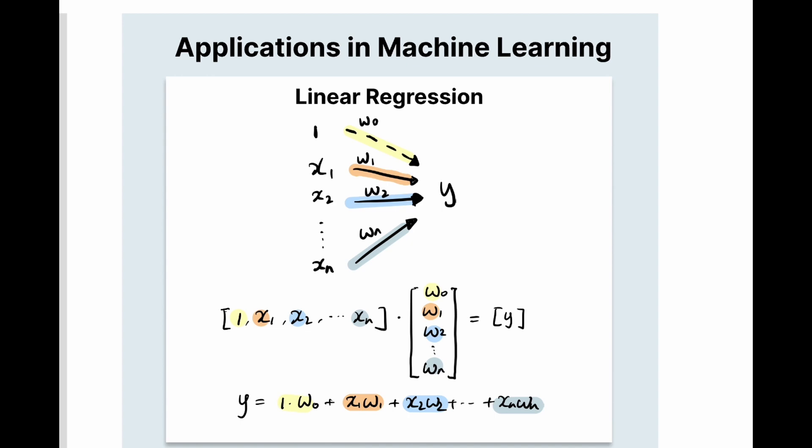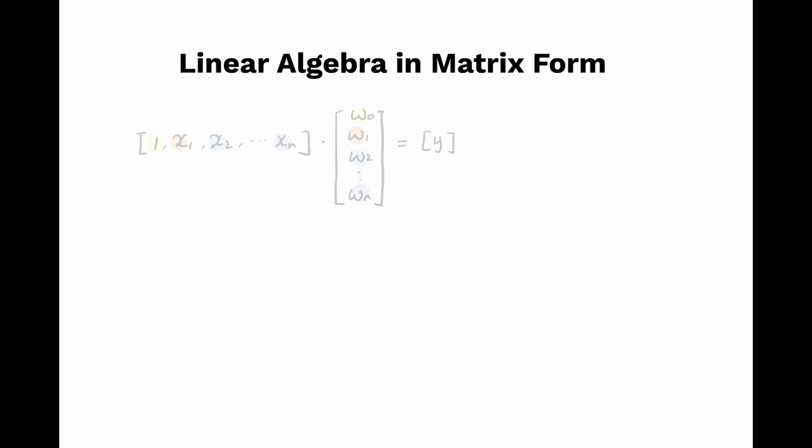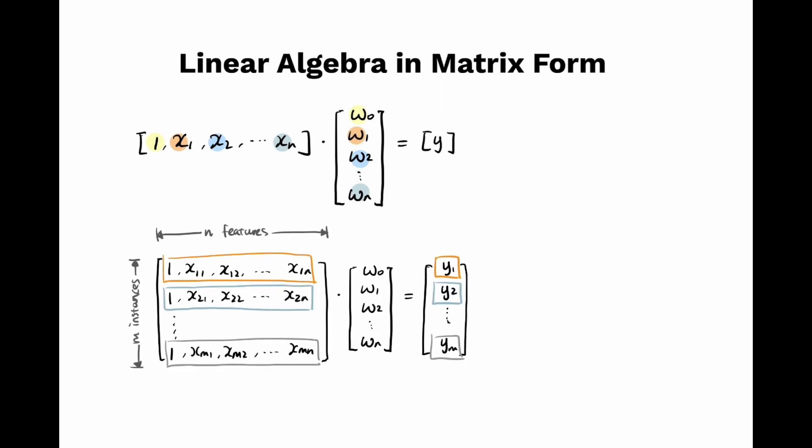When the number of instances increase, we naturally think of using for loops to iterate an item at a time, which can be time consuming. Instead, we can package all instances into a matrix. By representing the algorithm in the matrix format, the linear regression optimization process boils down to solving the coefficient vector W0, W1,